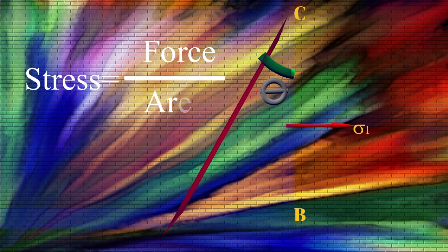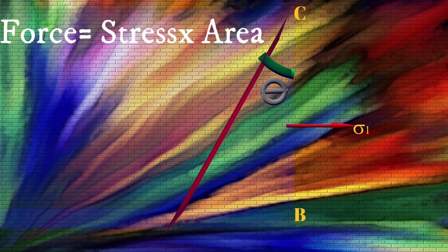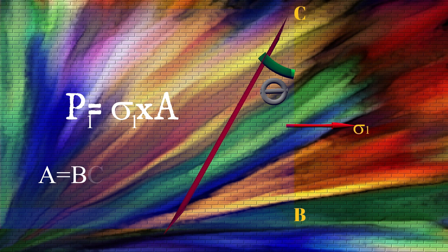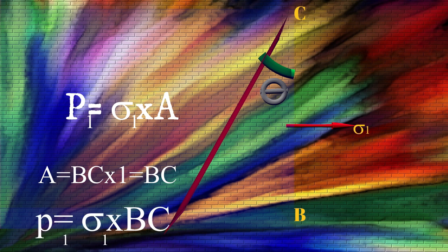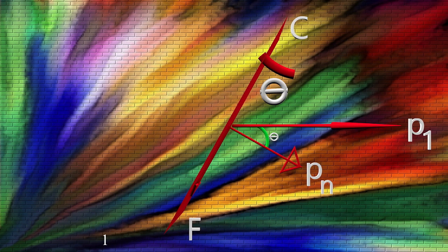The normal stress on the normal plane BC equals sigma_1, which converts to a force P1 equals sigma_1 multiplied by area BC, so P1 equals sigma_1 times BC. We can find the normal force Pn by taking the component of P1 perpendicular to the FC plane. Since the angle FCB equals theta, the angle between P1 and Pn is also theta, therefore Pn equals P1 cos theta.